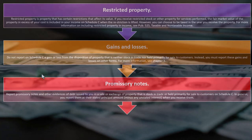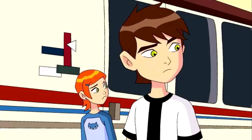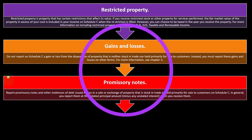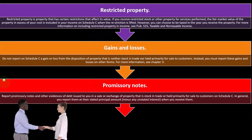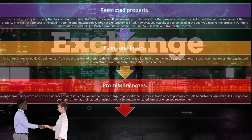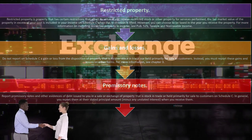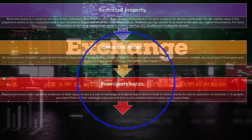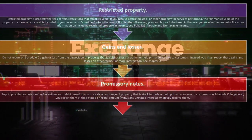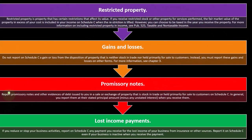Then we have promissory notes. Report promissory notes and other evidences of debt issued to you in a sale or exchange of property that is stock in trade or held primarily for sale to customers on Schedule C. In general, you report them at their stated principal amount minus any unstated interest when you receive them.